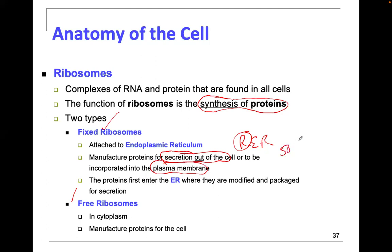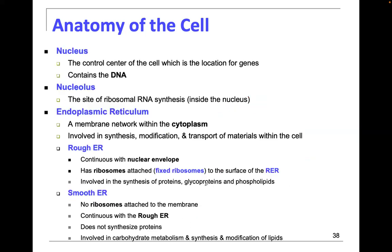The fixed ribosomes are making proteins designed to be secreted out of the cell or incorporated into the cell membrane. Remember, the cell membrane is 50% protein and 50% fat, and proteins can get damaged by oxidative stress. Your body always wants to recycle the cell membrane, and the rough ER produces proteins to help recycle it. The free ribosomes are not attached — they roam in the cytoplasm and make proteins for the cell itself, not for export.